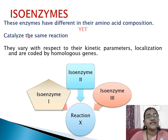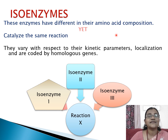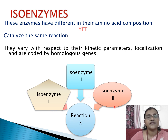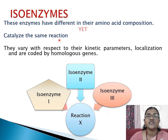Isoenzymes are enzymes which have different amino acid composition but still catalyze the same reaction. Isoenzymes 1, 2 and 3 can all catalyze the same reaction X. They vary with respect to their kinetic parameters, their localization, and they are coded by homologous genes.